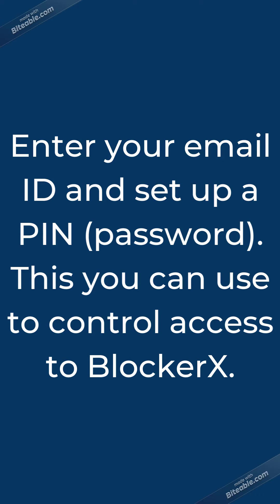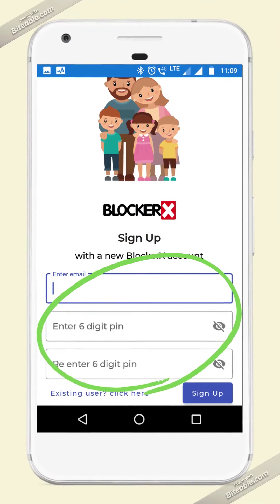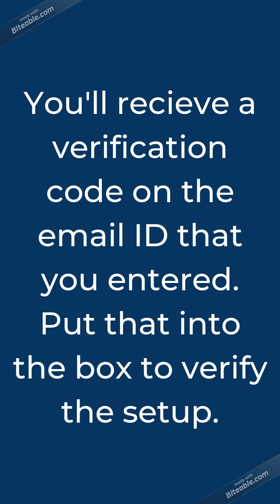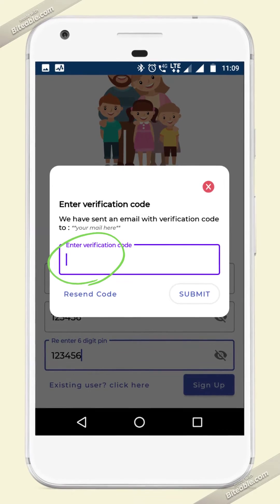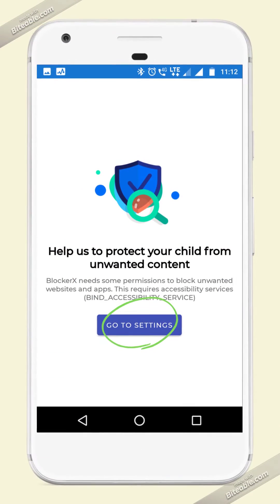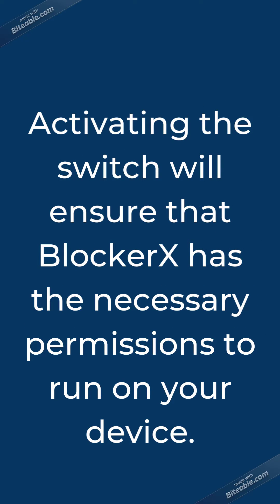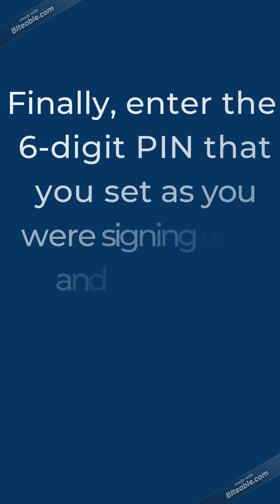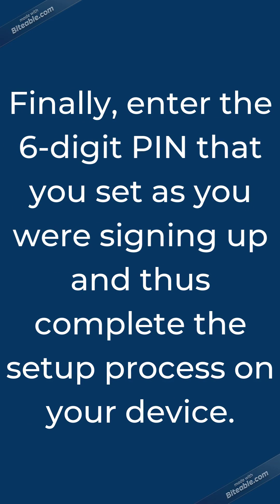This PIN you can use to control access to BlockerX. You'll receive a verification code on the email ID that you entered — put that into the box to verify the setup. Now you'll need to give accessibility permission to the app for functional purposes, so tap on the 'Go to Settings' button. Activating the switch will ensure that BlockerX has the necessary permissions to run on your device. Finally, enter the six-digit PIN that you set as you were signing up, and thus complete the setup process on your device.